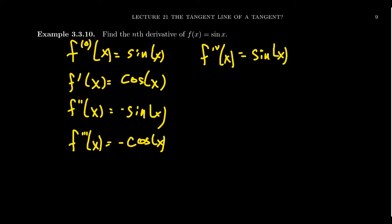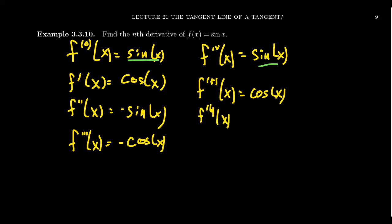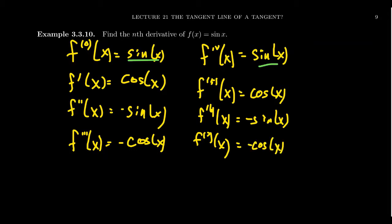You'll notice here that I started a new column — not because I ran out of space, but because I actually have the same function sine again. The fifth derivative: if we take the derivative of sine, we're going to get cosine again. The sixth derivative means we take the derivative of cosine, which is negative sine. The seventh derivative: you take the derivative of negative sine, which is going to be negative cosine of x.